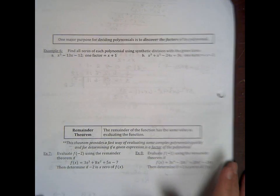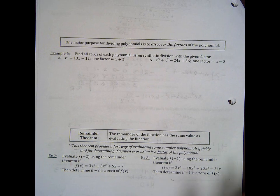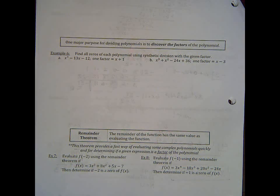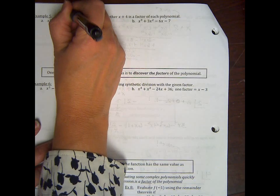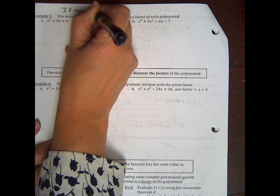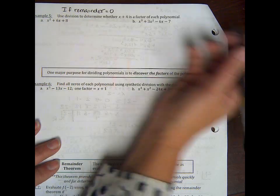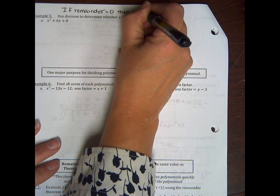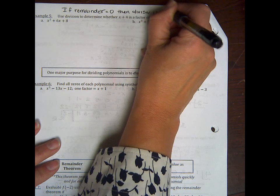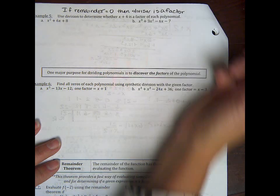Okay, this is part 2 of video 3.3 for AAT. Here we're trying to use synthetic division or long division to decide whether or not a binomial is a factor. So remember we just said, the factor theorem said that if the remainder equals 0, then the divisor is a factor. Okay, so let's give that a try.